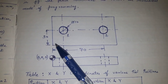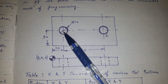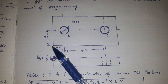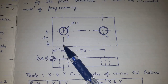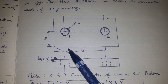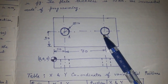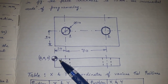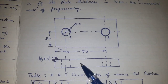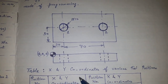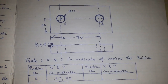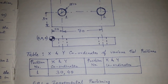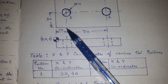Looking at the figure, the first hole is positioned 30 mm in the Y direction and 20 mm in the X direction. From the first hole, the second hole is 70 mm away. This is the workpiece in another view. Let us start by writing the X and Y coordinates.